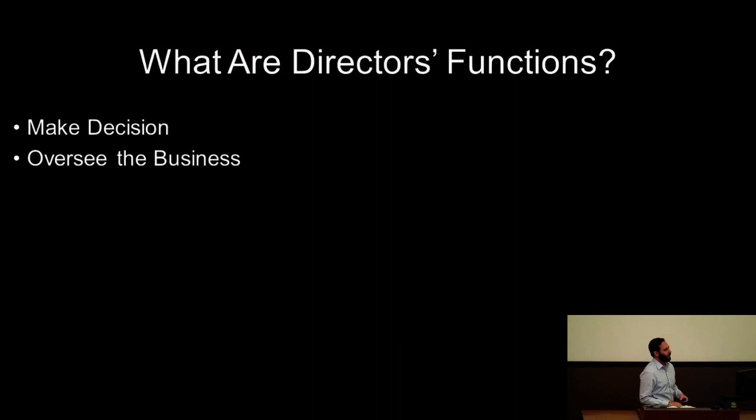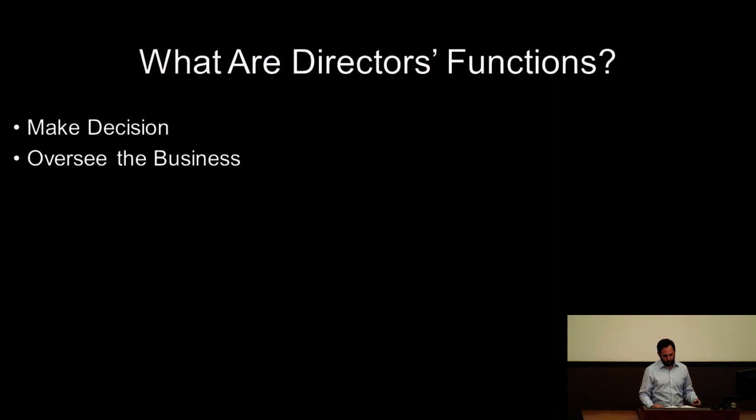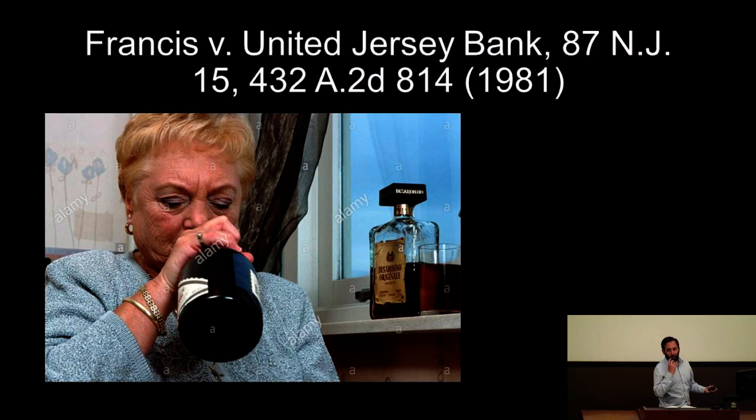What does a director do? They do two main things: they make decisions — actively make decisions — and they oversee the business to prevent it from running off a cliff. Right now we're talking about not necessarily affirmative decisions, but sort of oversight and making sure that everything looks okay.